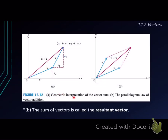Let's take a look at the geometric interpretation of vector sum. From the origin we have vector u, and then we have vector v. So u plus v means we are starting from the initial point of u and ending at the terminal point of v. Or you can draw both vectors u and v in standard position, and then draw another two vectors that are parallel to u and v respectively. The combination of these four vectors forms a parallelogram, and u plus v is from the origin to the opposite vertex.